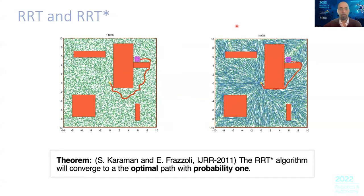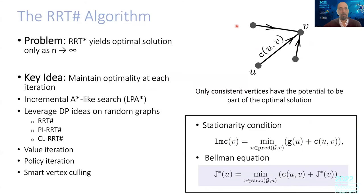So what is wrong with RRT*? Nothing in particular, except the fact that the theorem states you're going to get the optimal solution as the number of samples goes to infinity. In reality, you're never going to sample all the way to infinity — you're going to use only a finite number of samples. Since you have only a finite number of samples, there's no guarantee that the solution you get will be optimal given that data structure.